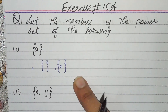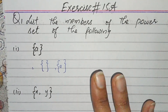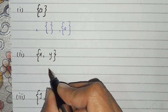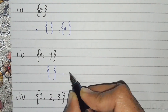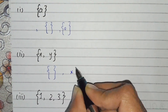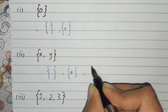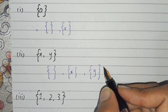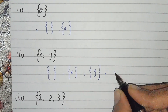Part number one is solved, very simple. Now part number two: first we write the empty set, then we write {x}, then we write {y}, then we write {x, y}.